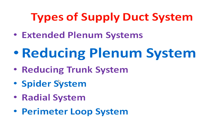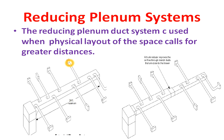Let's start our today's topic: reducing plenum system. First, I will briefly explain the extended plenum system and its drawbacks. In the extended plenum system, there is one AHU and one main duct connected to it. The size of this main duct is constant throughout its length, and its maximum length is 24 feet. We cannot increase this length beyond 24 feet.